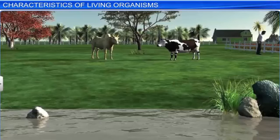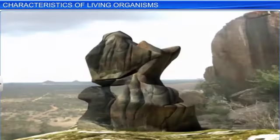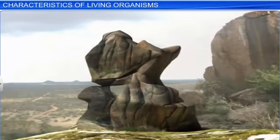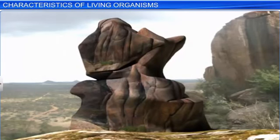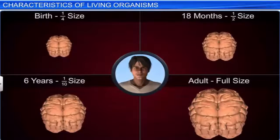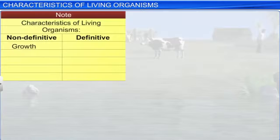However, everything that grows cannot be said to be a living organism. Take the example of a rock that will grow in size if sand gets deposited over it. However, this growth is external. On the contrary, growth in living organisms is internal. Growth is thus a characteristic feature of living organisms, though it is a non-definitive one.